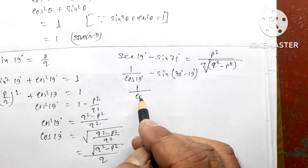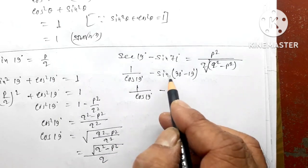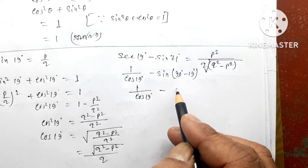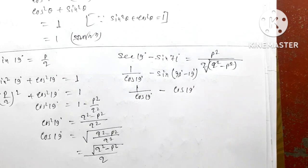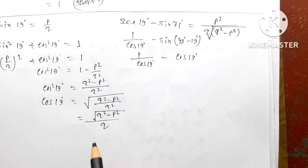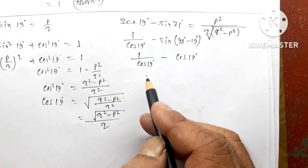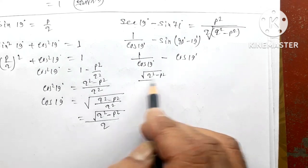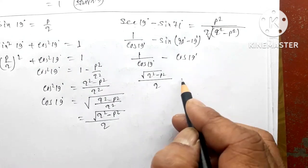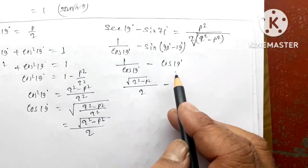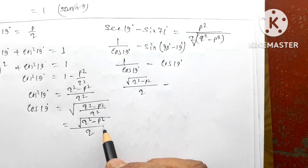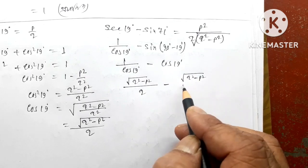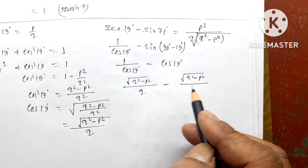1 by cos 11 degree minus sin 90 minus theta. What is cos theta? Cos 11 degree. This is cos 11 degree. So root q square minus p square divided by q minus cos 11 degree. So root q square minus p square by q.